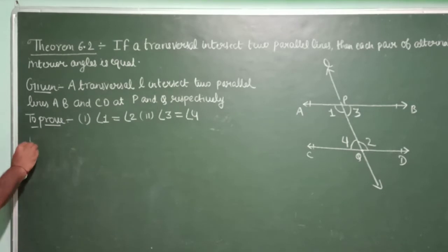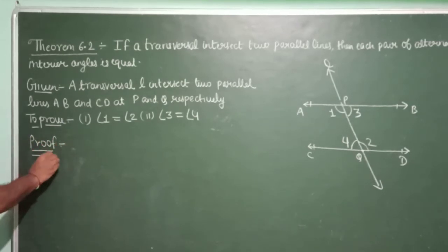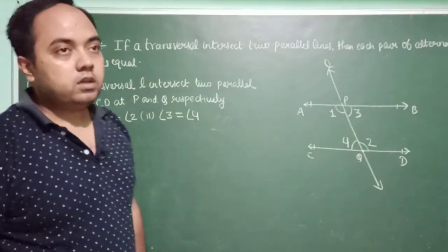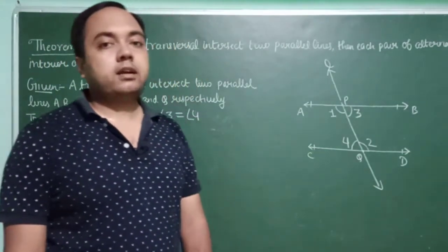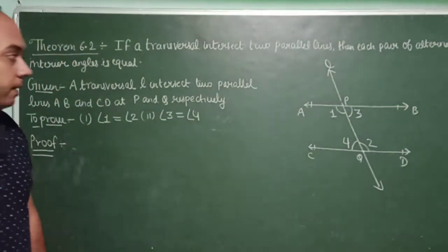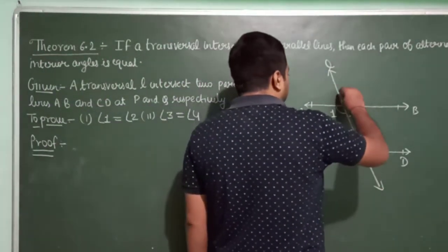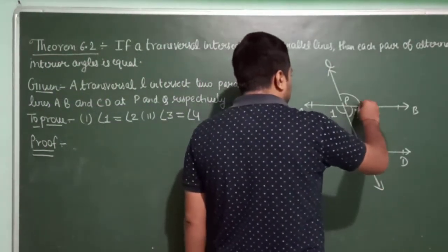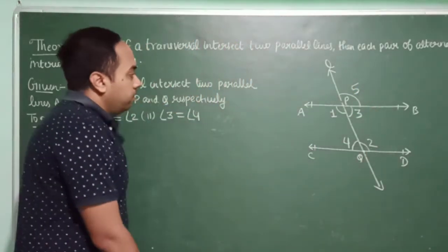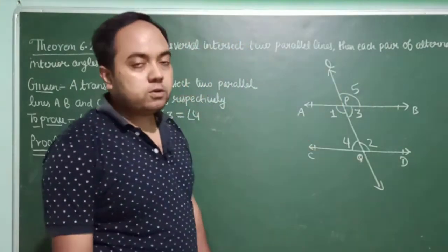Now for the proof. Before this theorem, we know the corresponding angles axiom and its converse, and we also know vertically opposite angles. We will use these concepts to prove this theorem. Suppose I introduce an additional angle here — angle 5.